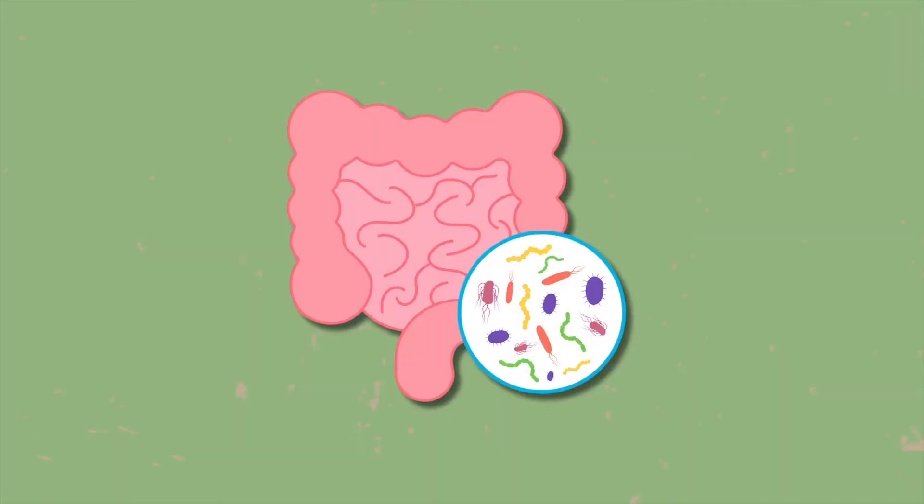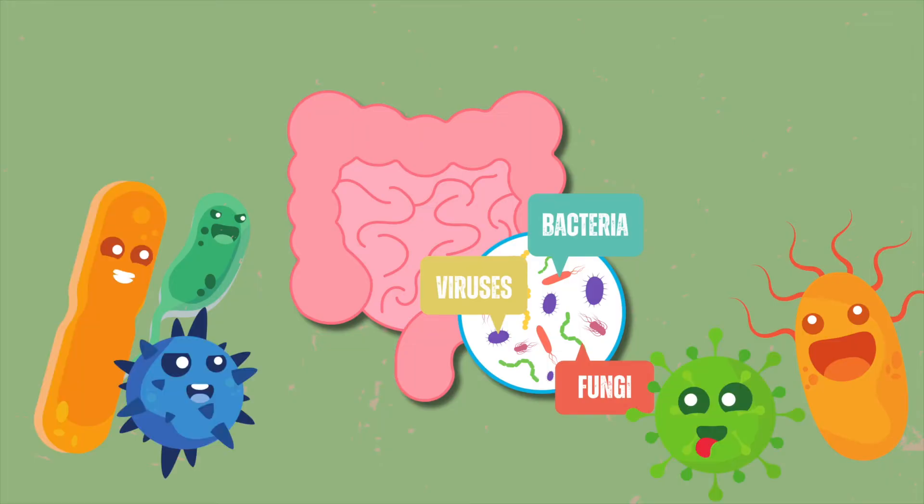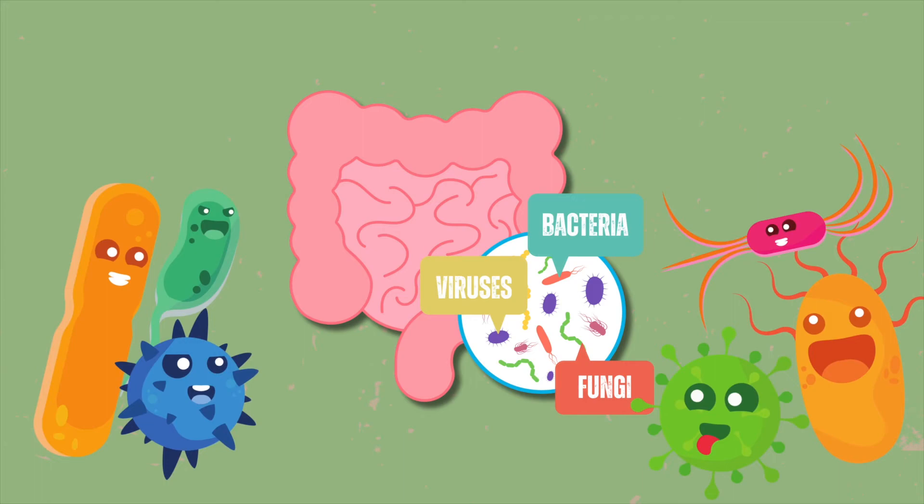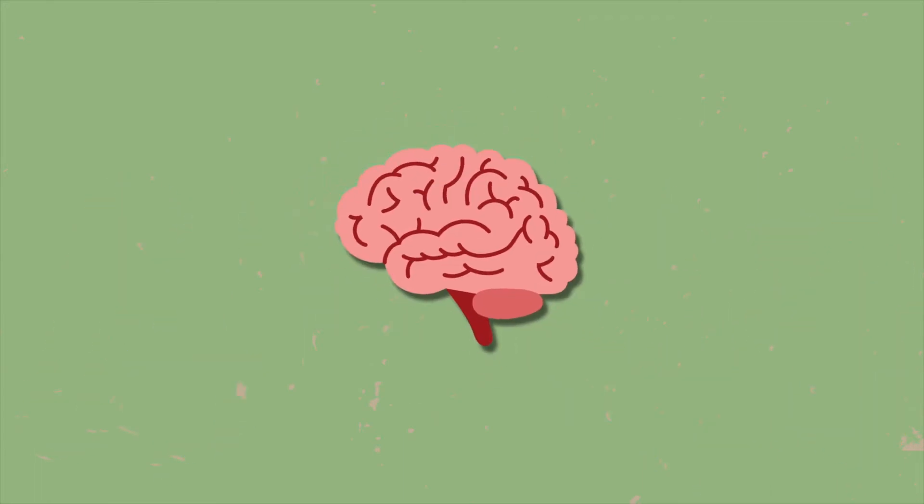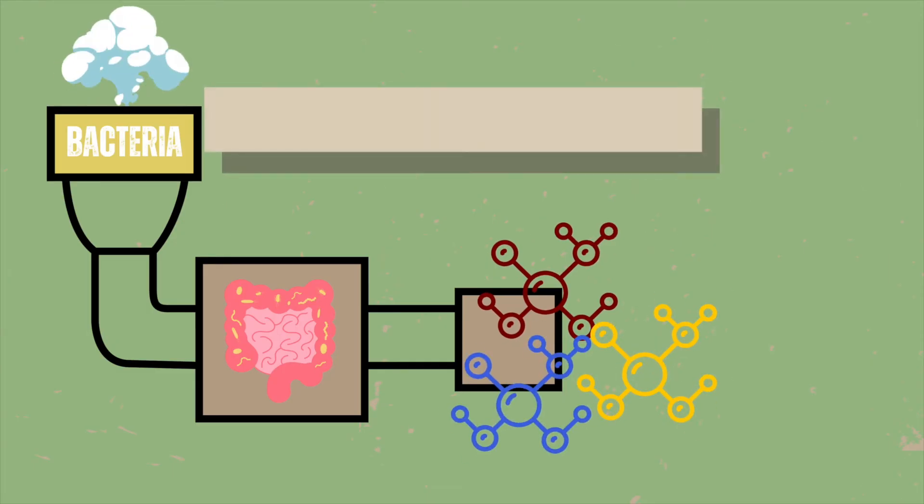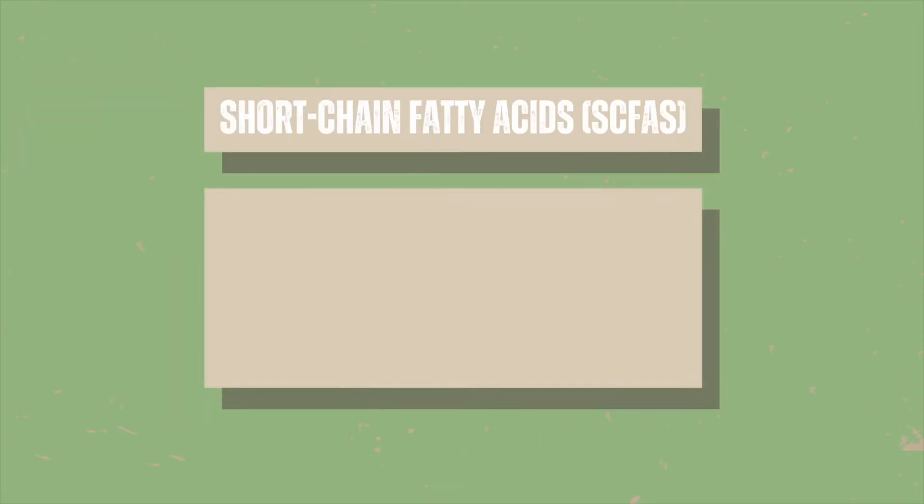Another key player in this gut-brain communication is the gut microbiome, a diverse community of trillions of bacteria, viruses, fungi, and other microorganisms residing in the gastrointestinal tract. The microbiome produces a variety of bioactive compounds that can influence brain function. For instance, certain bacteria in the gut produce short-chain fatty acids, or SCFAs, and short-chain fatty acids have been shown to possess anti-inflammatory properties and can cross the blood-brain barrier to influence brain function.